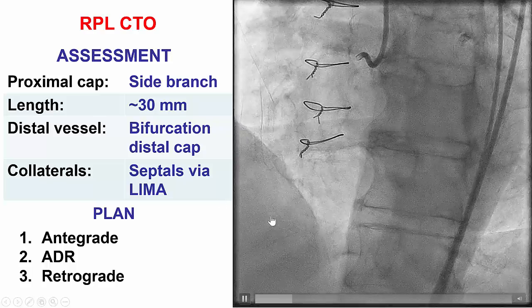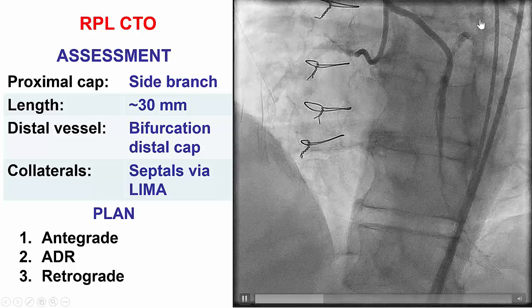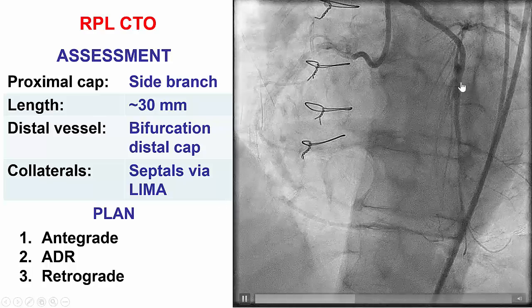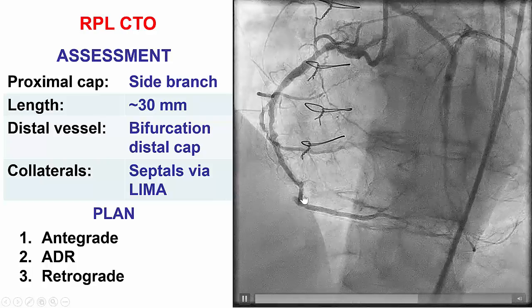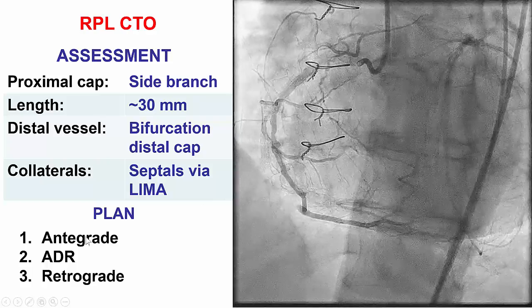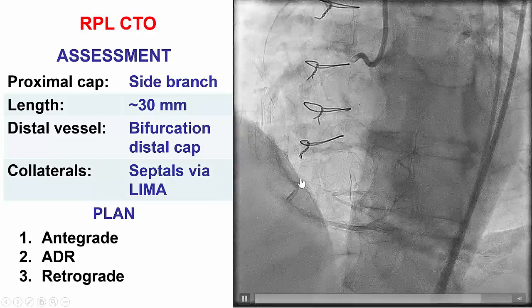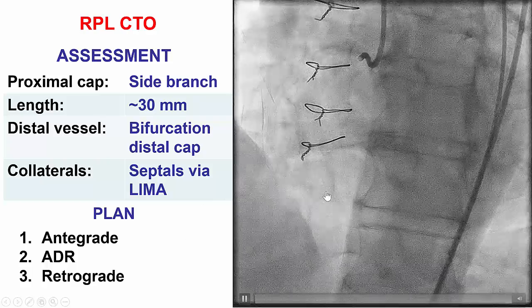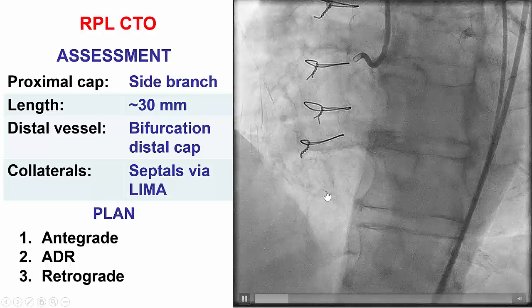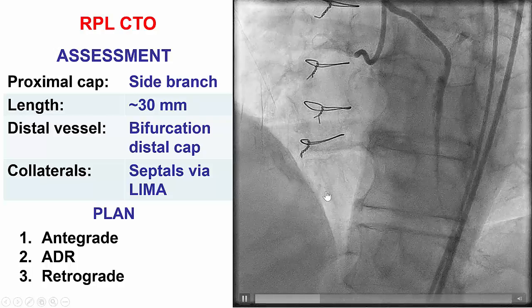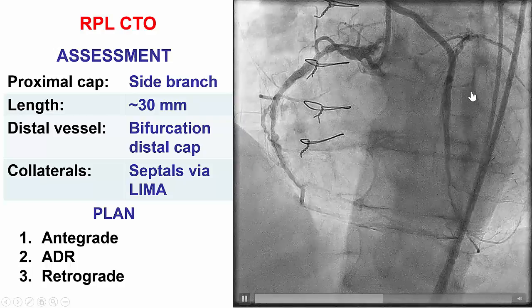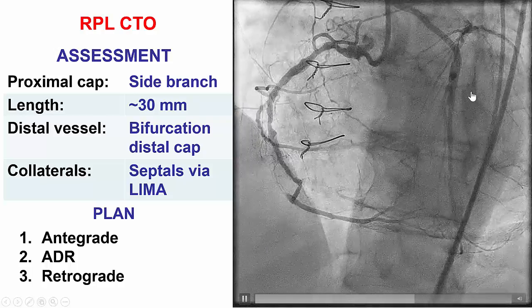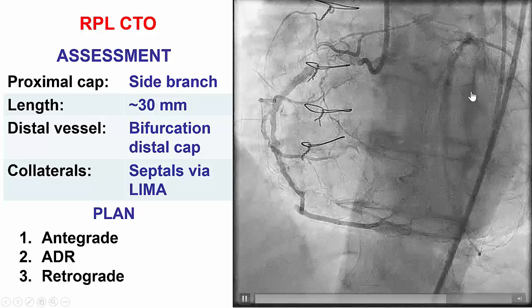Given the risk associated with going retrograde via the LIMA, the approach here was to try antegrade first, either with wire escalation or with antegrade dissection reentry, before attempting high-risk retrograde from the left internal mammary artery.